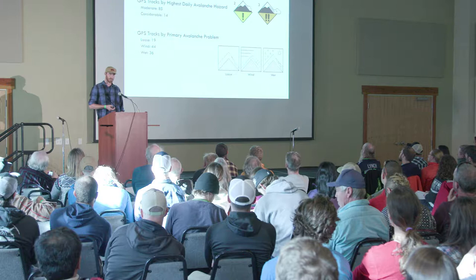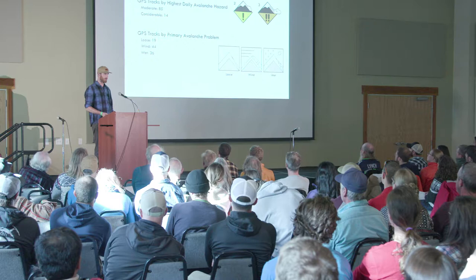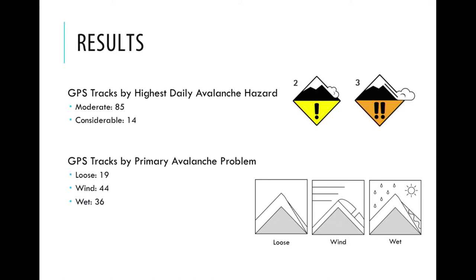A little about our results. This is just from last year — we ended up with around 100 tracks when all was said and done. A lot of people would use the GPS but didn't want to fill out the survey, so we had to remove those. The days we went out were either on moderate or considerable avalanche days: 85 tracks from moderate hazard days and 15 from considerable. In terms of avalanche problems, we had loose wind and wet — and that's just the primary problem for the day.